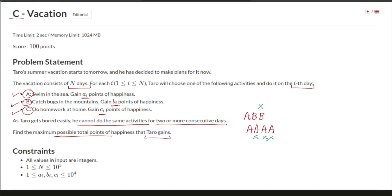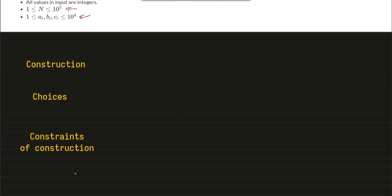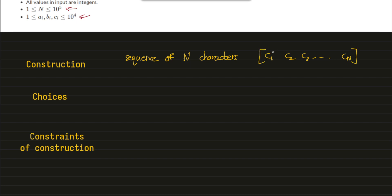The constraints for N and the happiness points are given. Now let's look at this from a construction point of view, since we need to know what kind of construction we are performing for this dynamic programming solution. It's obvious that we need to construct a sequence of N characters: c1, c2, c3, all the way up to cn. Each ci is either a, b, or c, which is the activity he will do on the i-th day.